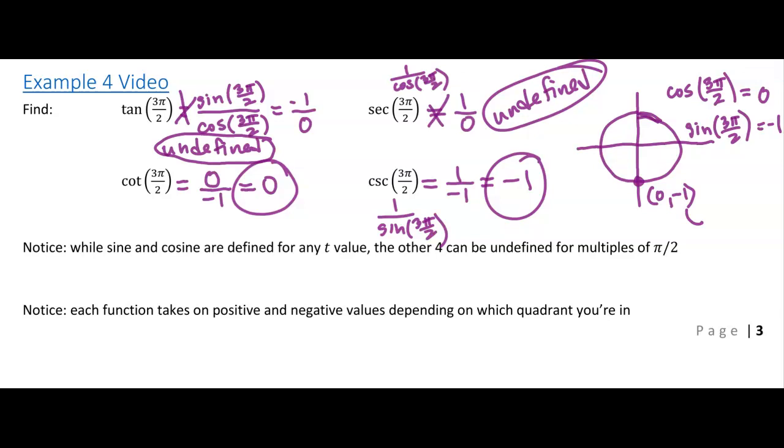So there are the values of those four functions at 3 pi over 2. And I just want to say again that we're really restricted right now. We've only got these quadrant angles. And at those quadrant angles, the multiples of pi over 2, one of your coordinates is always 0. And if one of your coordinates is 0, that's going to make a couple of these trig functions undefined.